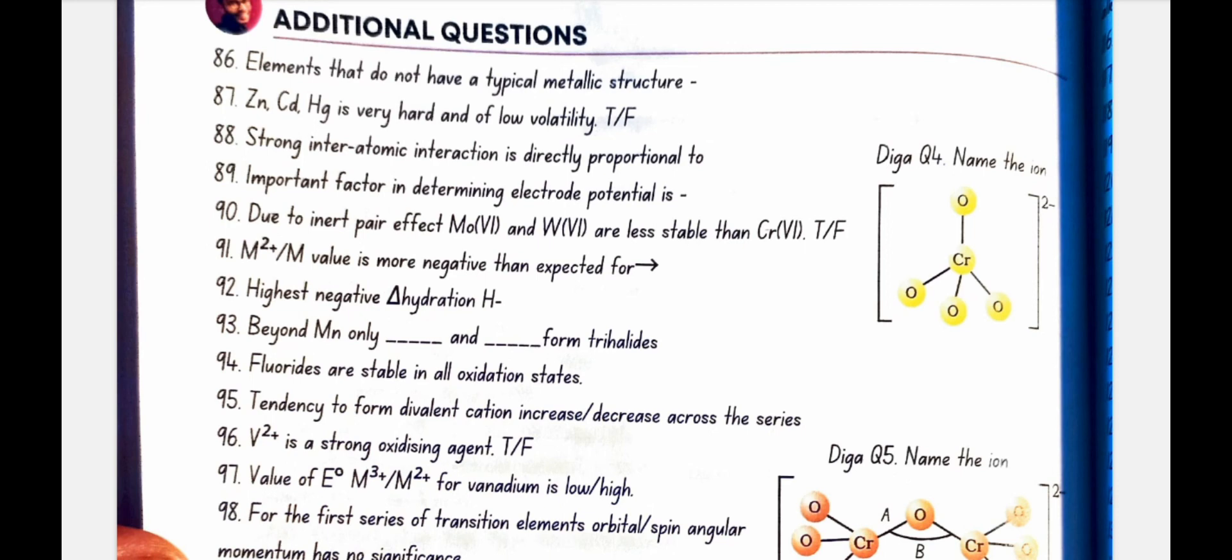Strong interatomic interaction is directly proportional to number of unpaired D-electrons. Important factor in determining electrode potential is enthalpy of atomization. Due to an inert pair effect, MO6 and W6 are less stable than Cr6. No, false.